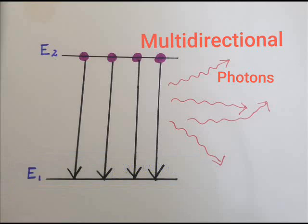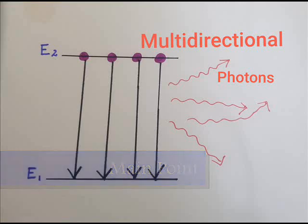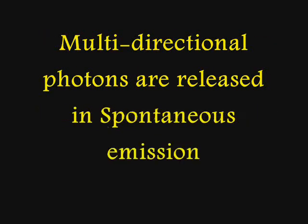The main point to remember is that the photon released during spontaneous emission of radiation is in an arbitrary direction, which means it can be in any direction. Therefore, in spontaneous emission of radiation, the photons released are always multi-directional and not in the same direction. In short, the photons released are multi-directional.